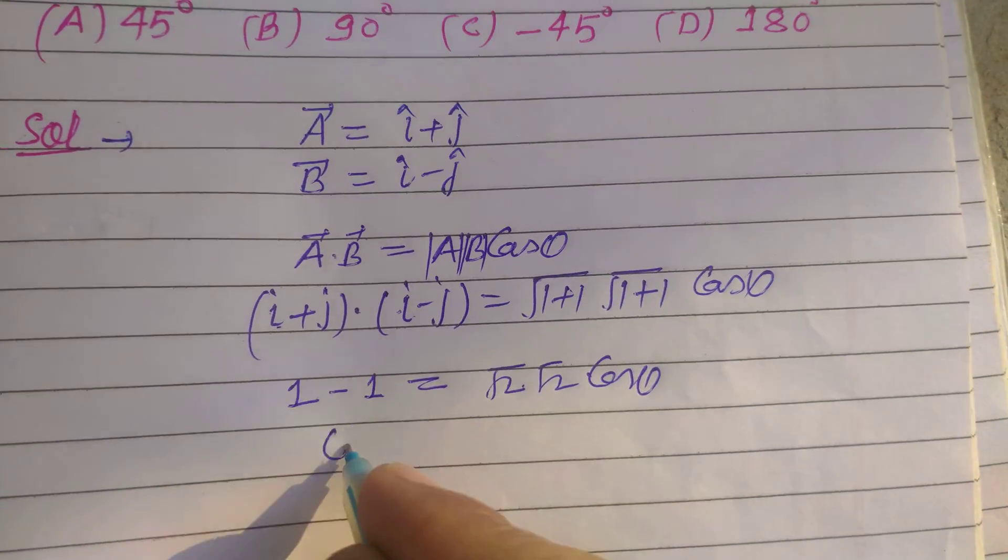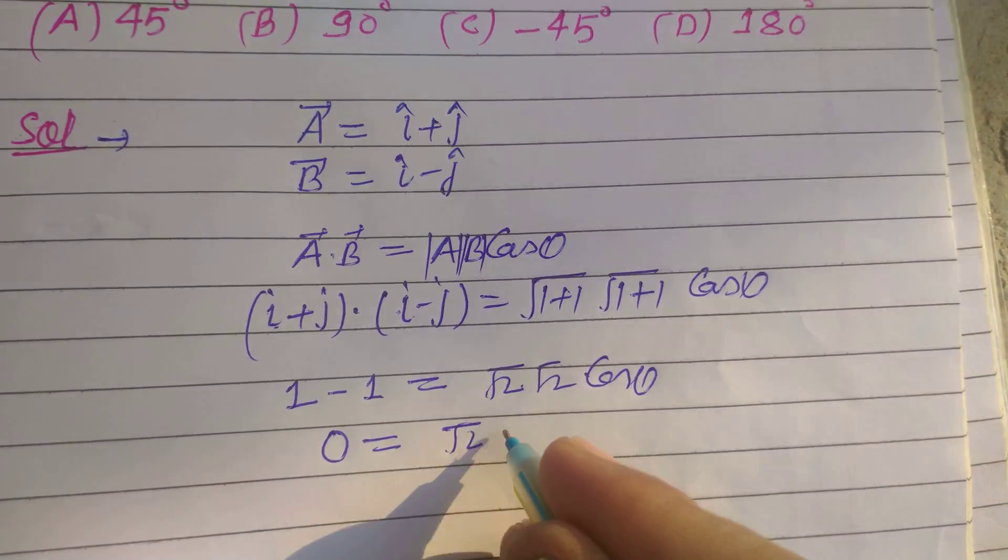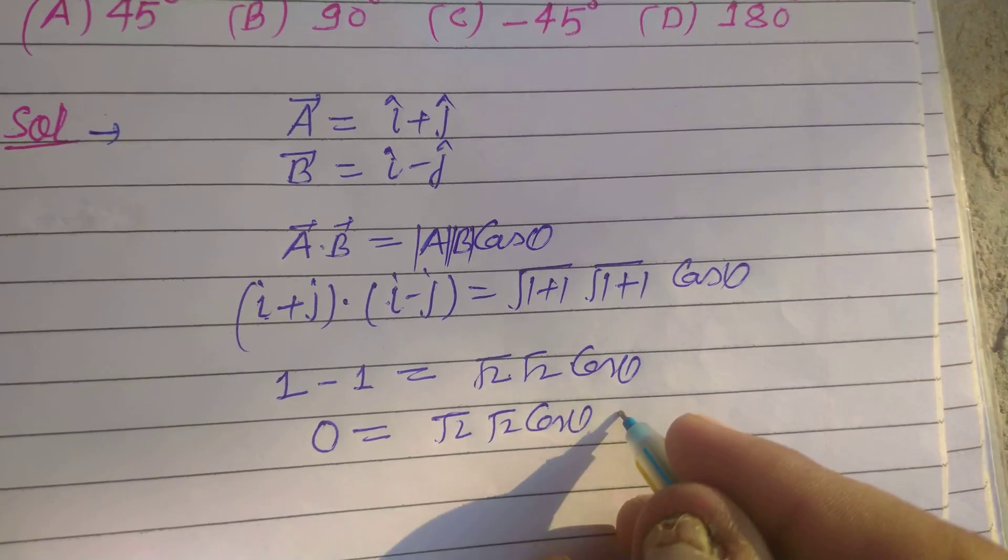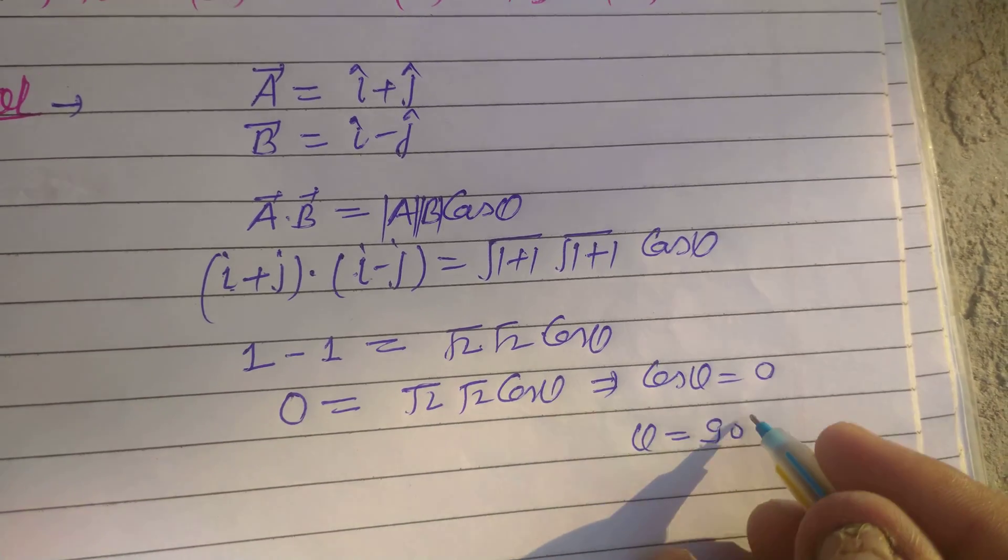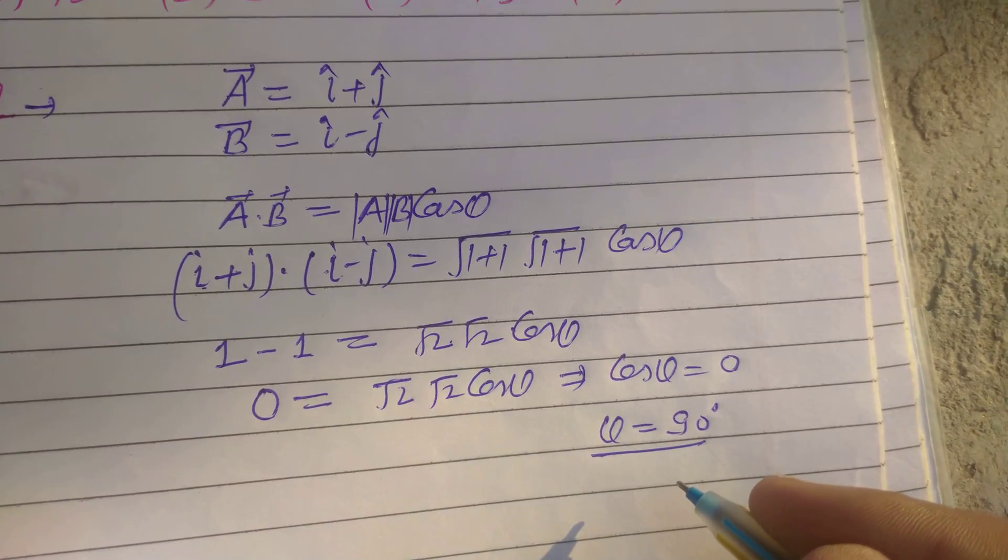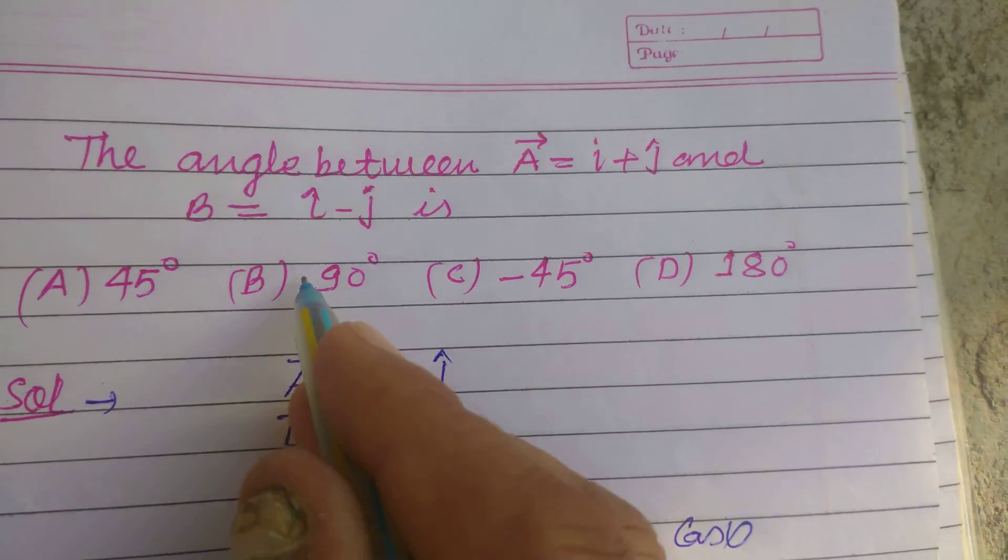And this is 0 equals root 2 into root 2 cosine theta. Therefore, cosine theta equal to 0 and theta equal to 90 degrees. So the angle between the vectors is 90 degrees.